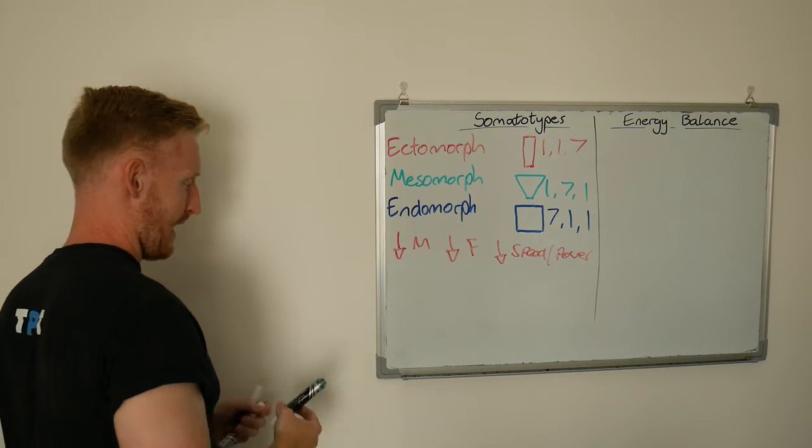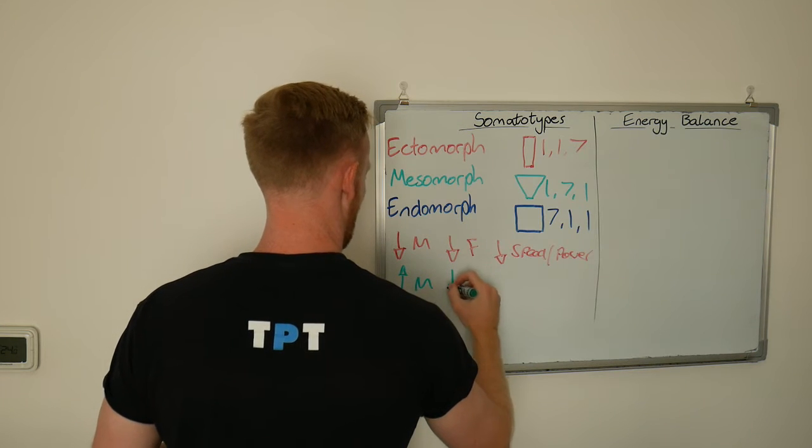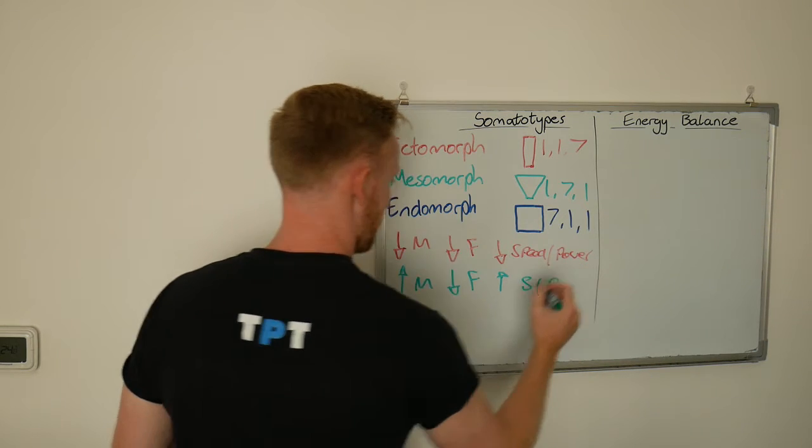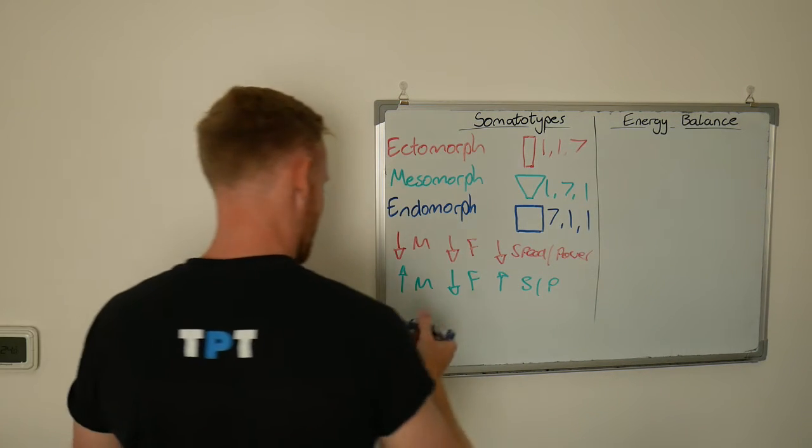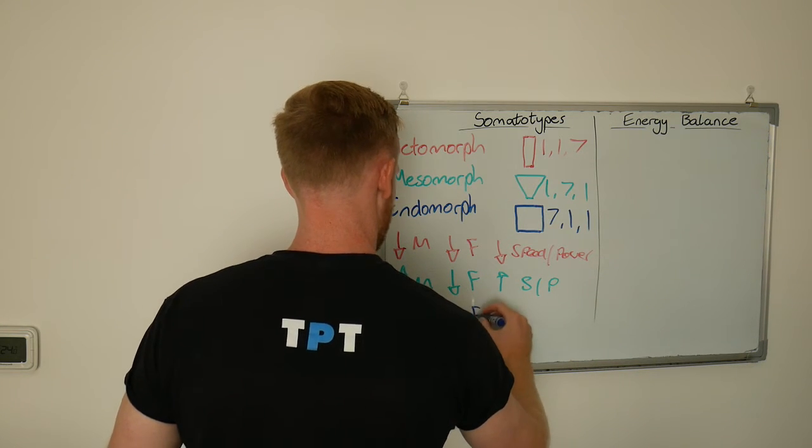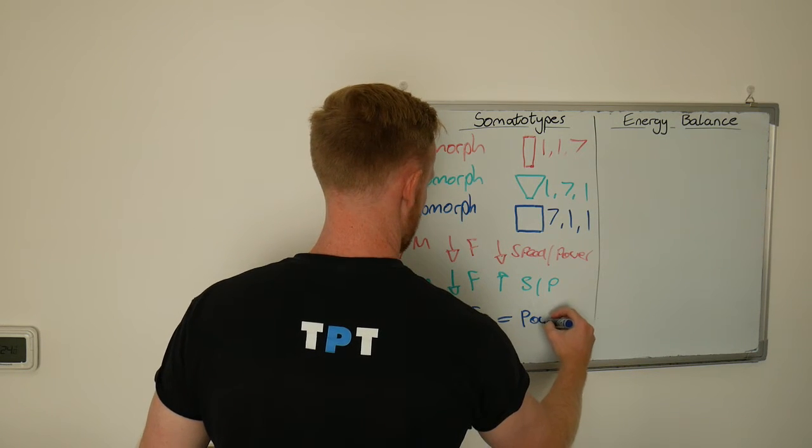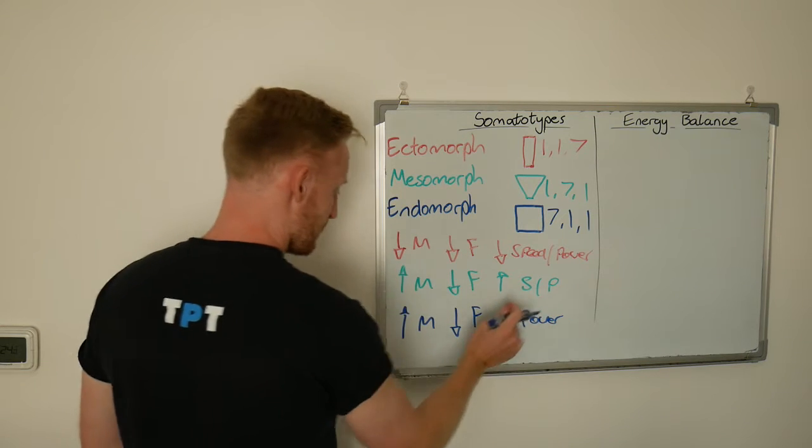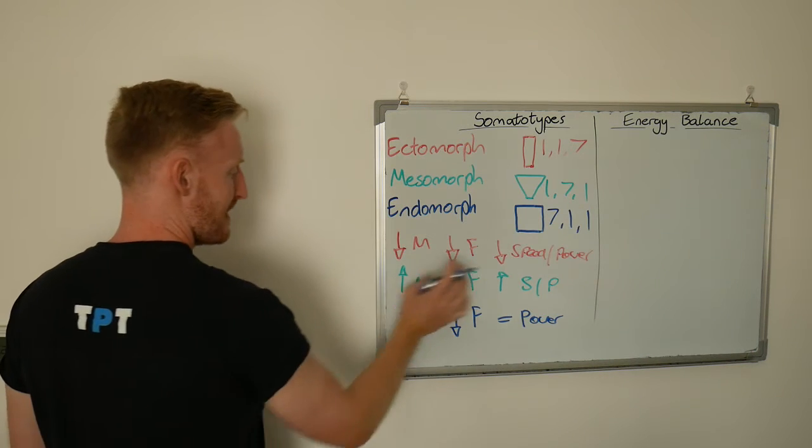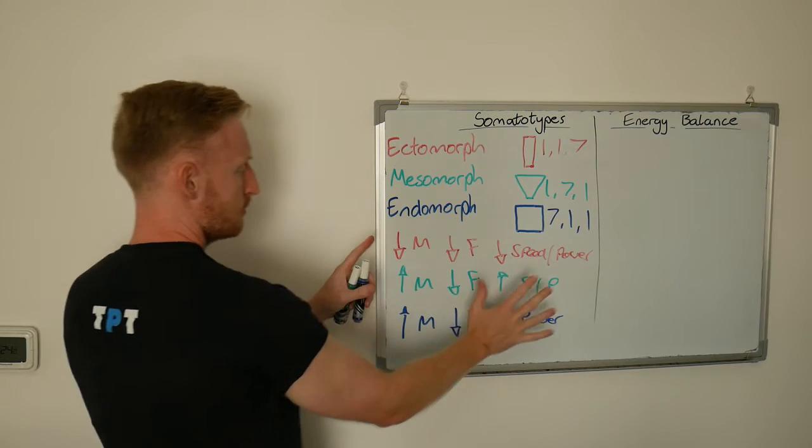Mesomorphs typically have high muscle, low fat, high speed and power. Endomorphs typically have high muscle, low fat, but not necessarily the most powerful. They might have strength because of their muscle mass, but not necessarily the power output of mesomorphs because of that additional fat mass inside their body.